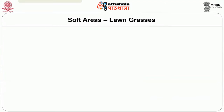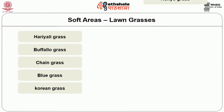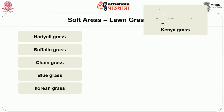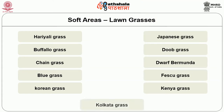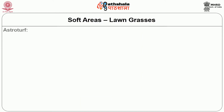Important grasses useful for lawns in India include Hariyali grass, buffalo grass, chain grass, blue grass, Korean grass, Japanese grass, dupe grass, dwarf Bermuda, fescue grass, Kenyan grass and Kolkata grass.